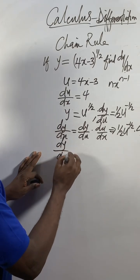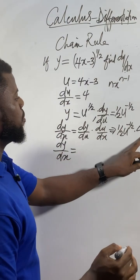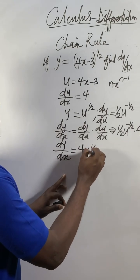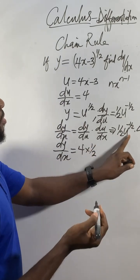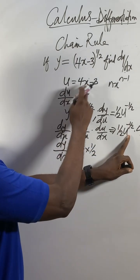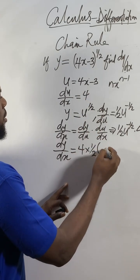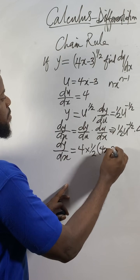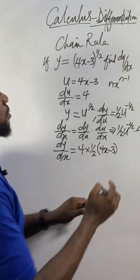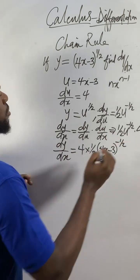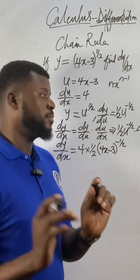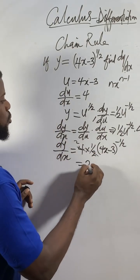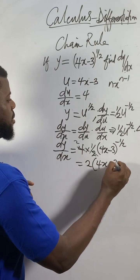So dy/dx equals 4 times (1/2)u^(-1/2). Remember u represents 4x - 3, so substitute back: 4 * (1/2)(4x - 3)^(-1/2). The 4 and 1/2 simplify to 2, so we get 2(4x - 3)^(-1/2).